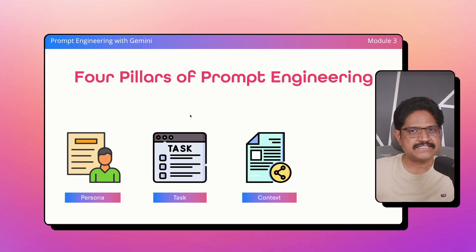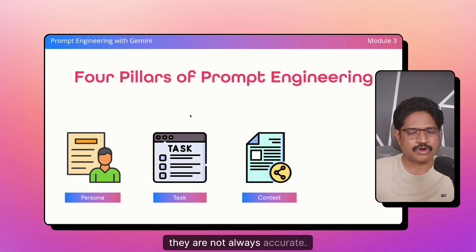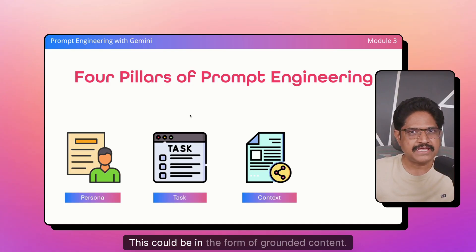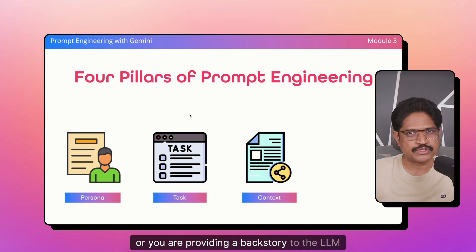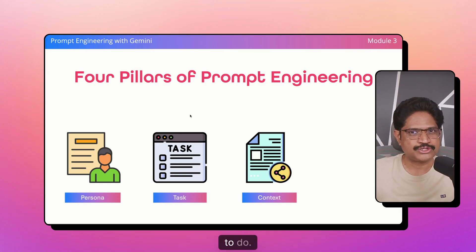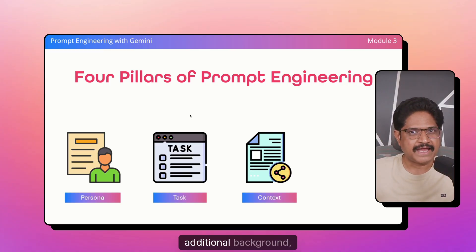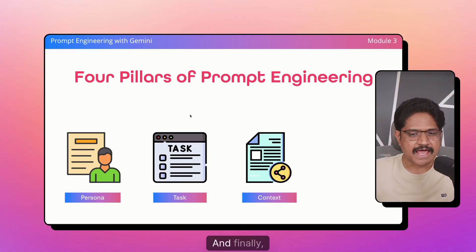The third pillar is the why, which is the context. LLMs tend to hallucinate and are not always accurate, so you need to provide enough context. This could be in the form of grounded content — you are providing existing content or a backstory to the LLM to make sure it knows exactly what it needs to do. This will provide additional background, context, and backstory to the LLM.